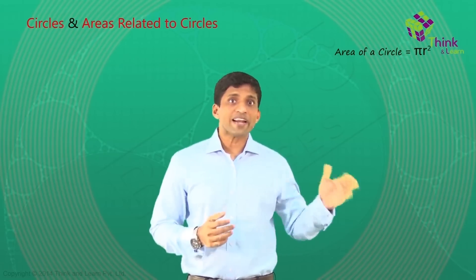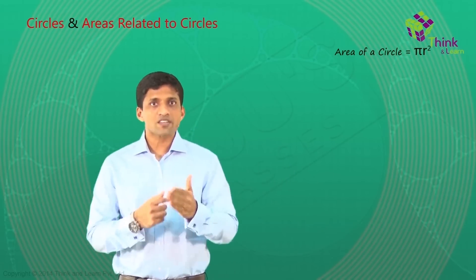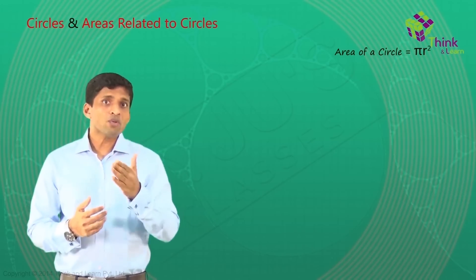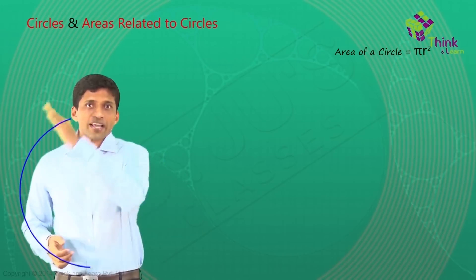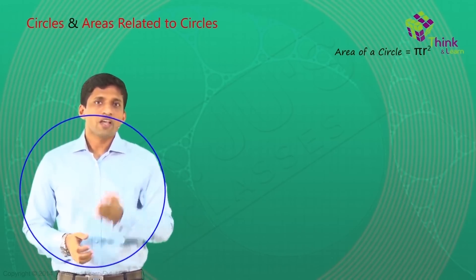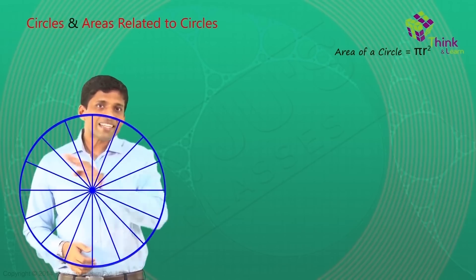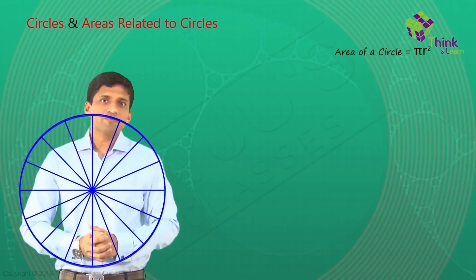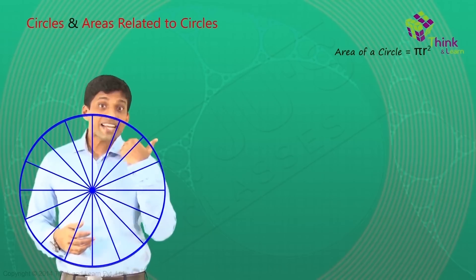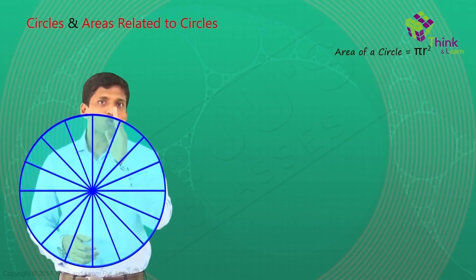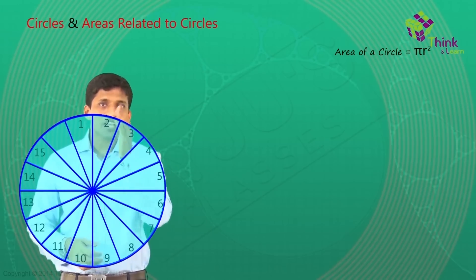One more thing which we can do is, area of a circle can be visualized in a rectangle also, like some of you must have seen in some of the books. So how we can do that? Just to recap, you take a circle, cut the circle into multiple sectors using diameters. Let's take 16 sectors like this. And if I number them as 1, 2, 3, 4 up to 16.